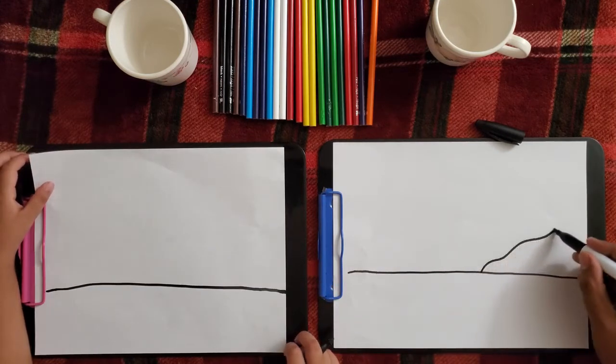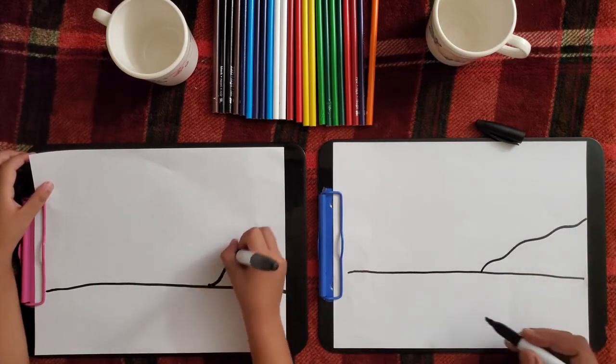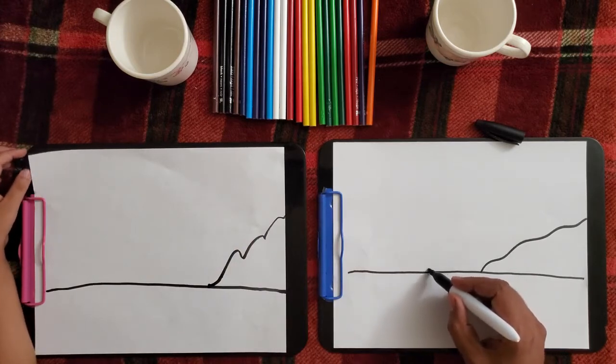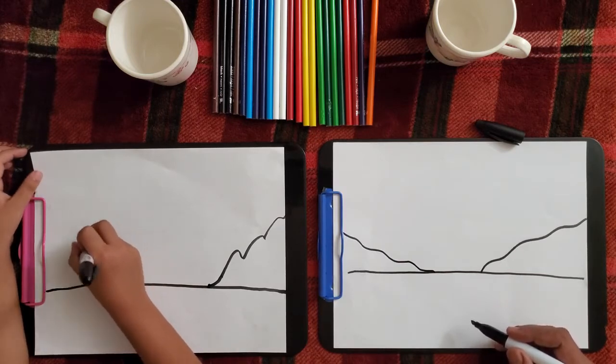And then, draw a hill. A swarmy line for the hill. And on the other side do the same thing.